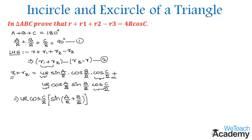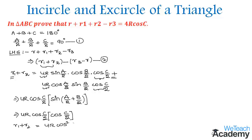Using equation 1, we can replace sin(A/2 + B/2) = sin(90° − C/2) = cos(C/2). Multiplying, we get r1 + r2 = 4r·cos²(C/2). Let us name this as equation 3.